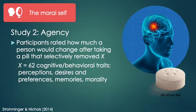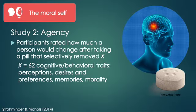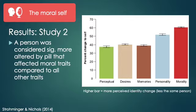The vignette went like this: a pill has been developed that, once swallowed, would permanently alter only one part of a person's mind without affecting anything else. Participants rated how much a person would change after taking a pill that selectively removed one of 62 different traits, falling into categories including perceptions, desires and preferences, memories, and morality. They found that a person was considered most changed by pills that affected moral traits. All other traits—including personality traits, traits related to memory, desires, and perceptual abilities—led to significantly less perceived change.